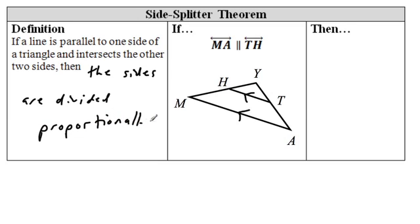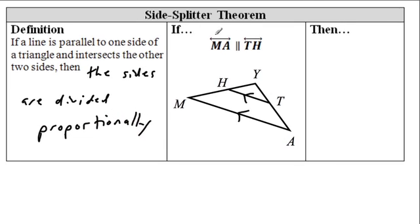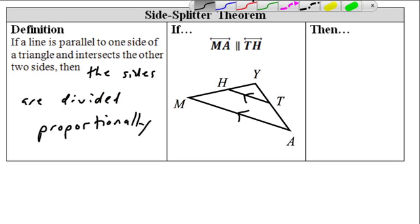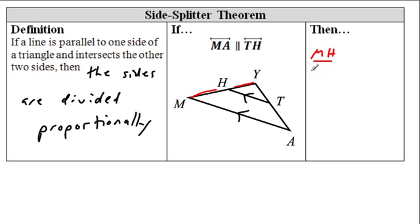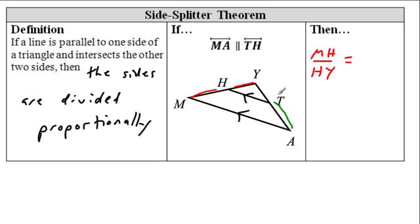So what does that mean? Let's write down what this means. Here's my picture — it means that this side is proportional to this side. So MH is to HY as what? Well, if I go on the flip side, AT is to TY. So they're proportional, and then we can use it to solve lots of stuff. That's the side splitter theorem.